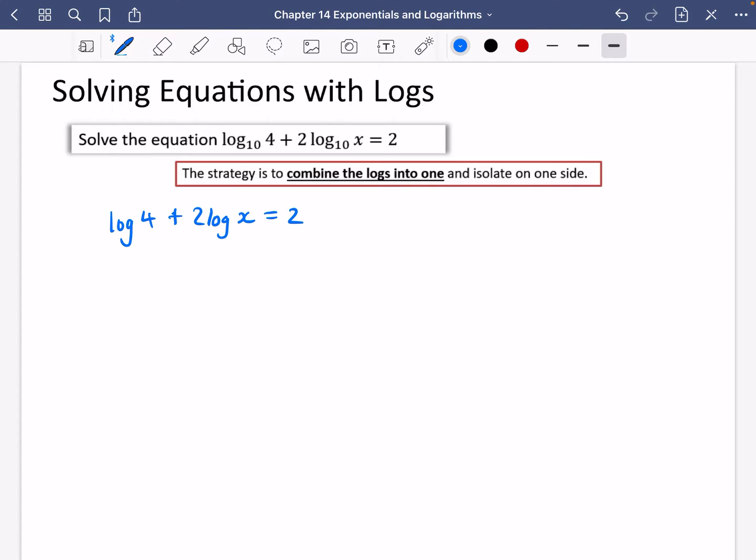The strategy is to combine the logs into one and isolate on one side. So at the moment, they're both on one side. So I'm now going to try and combine them together. Now, I can't just add them. I can't make the 4 and the x multiply because of this 2 that's outside the front. The log laws at the very beginning said if you have got log x plus log y, it's equal to log xy. But it doesn't say what you can do if there's a 2 in front.